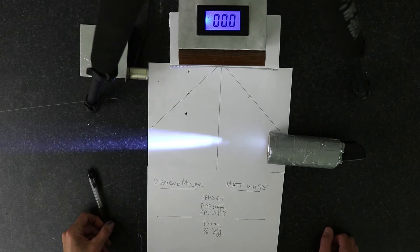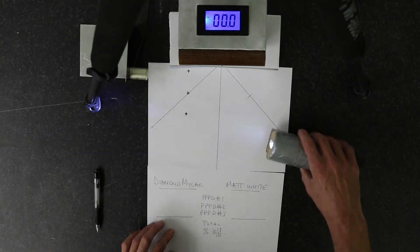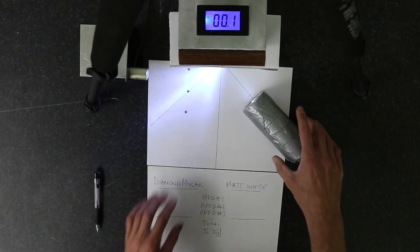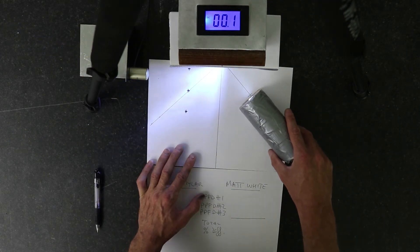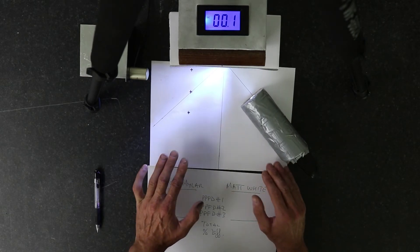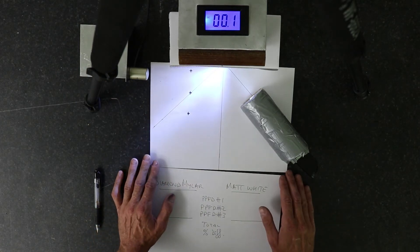So here we are at our test rig getting everything set up. We've got our light source with the slit to provide us with a beam, so we align that along the 45 degree line and directed at, in this case we're starting off with the diamond mylar here.